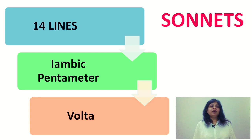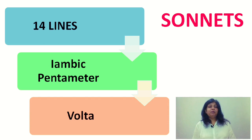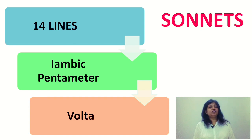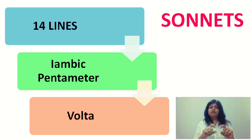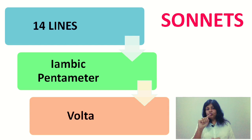A sonnet is a poem of 14 lines. Generally the sonnets are written in 14 lines. Second, these sonnets are written in iambic pentameter — I will put the word 'generally' because it is not necessary that these sonnets are written in iambic pentameter. But most of the English sonnets are written in iambic pentameter, meaning every line has 10 syllables.